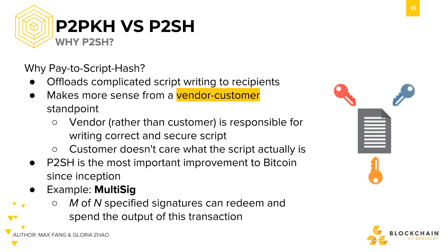Therefore, all pay-to-script-hash requires is for the sender to use only the hash of the script to compose a locking script, and to require the customer to pay to their script hash. The customer doesn't care what the script actually is — all they care about is being able to pay in an efficient manner and getting their goods. It's up to the vendor to write their correct output script so that they and only they are able to redeem the output later.